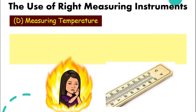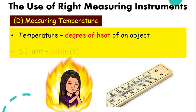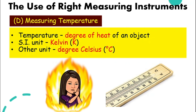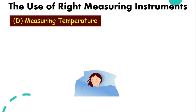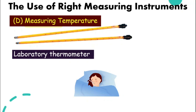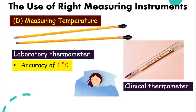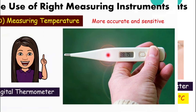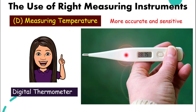How about temperature? Temperature is the degree of heat of an object, and the SI unit is Kelvin. More commonly, we use degrees Celsius, which we see a lot more often. We can use a laboratory thermometer with an accuracy of one degree Celsius, or a clinical thermometer with an accuracy of 0.1 degree Celsius. We also have a more sensitive and accurate option, which is a digital thermometer.